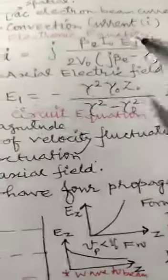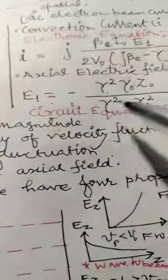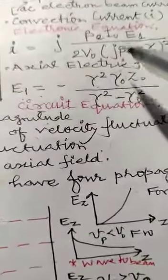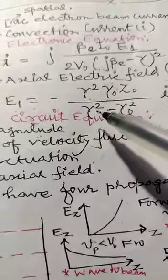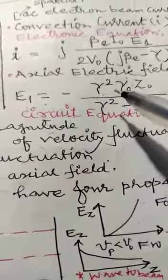These two equations are solved by placing E1 here, and this axial electric field equation is known as the circuit equation. We will see the solution of this where we will find out the gamma values, and this lecture we will take in the next video. Thank you.